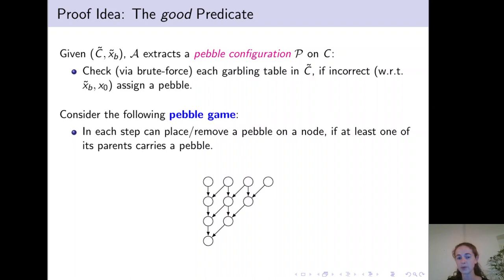Then we can start by placing a pebble on any source node and then can place a pebble on a child of this source node, then can remove the pebble on the source node. Note that we can always place pebbles on any source node because the source does not have any parents.